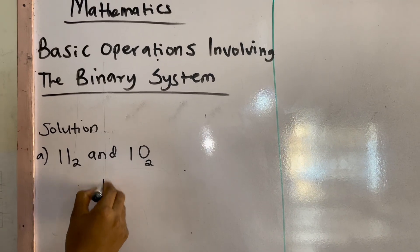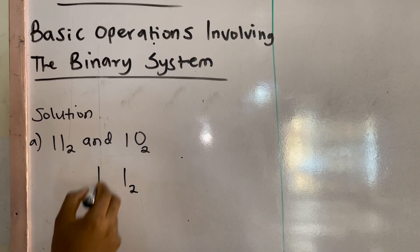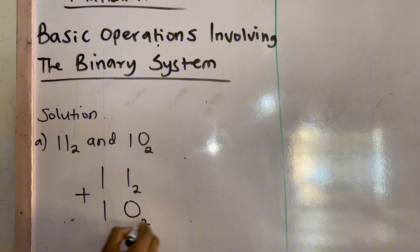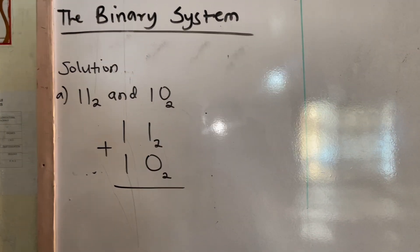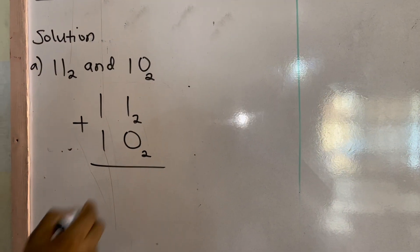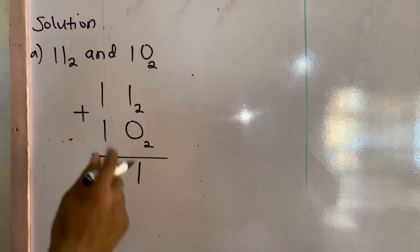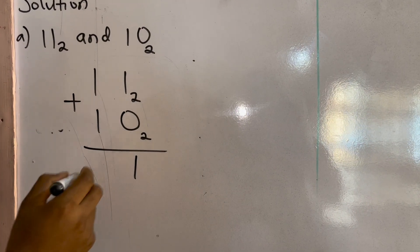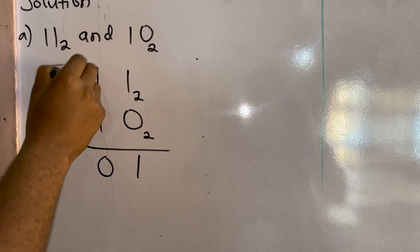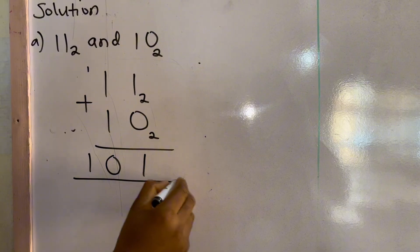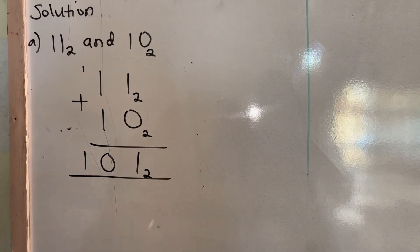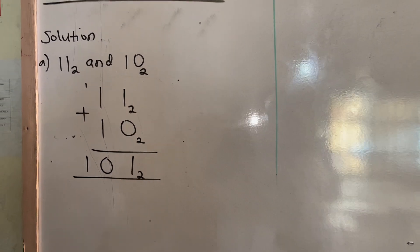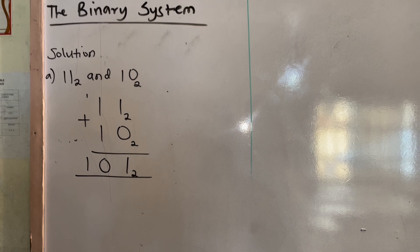So we have 11 base 2 plus 10 base 2. Using the basic rules: 1 plus 0 gives 1; 1 plus 1 gives 1 0, so we write 0 and carry 1. That means 11 base 2 plus 10 base 2 equals 101 base 2.